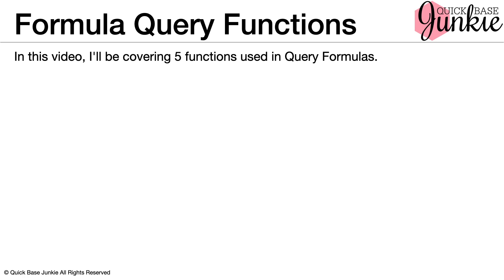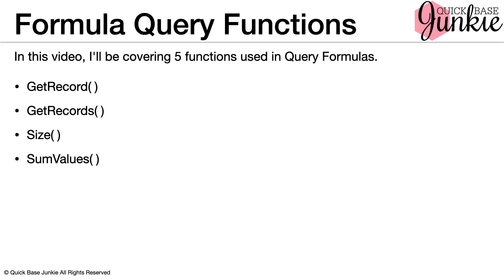In this video, I'll be covering five functions used in query formulas. These include getRecord to return or process information regarding a single, specific record; getRecords to return or process information about a list of records; size to count the number of items returned in a list; sumValues to sum a specific field from records returned in a list; and getFieldValues, which will allow us to get a list of values from a specific field from records returned in a list. I'll also share answers to some frequently asked questions and notes from my experience using these functions.